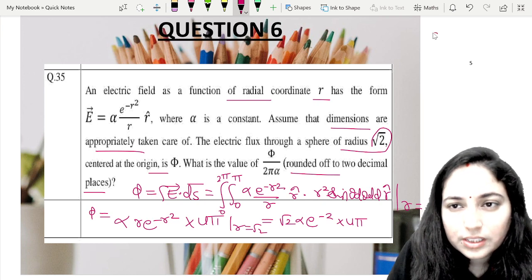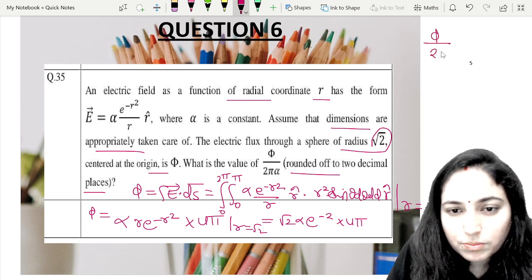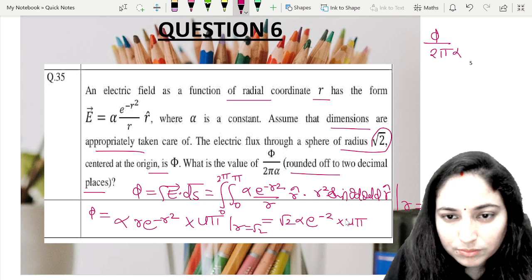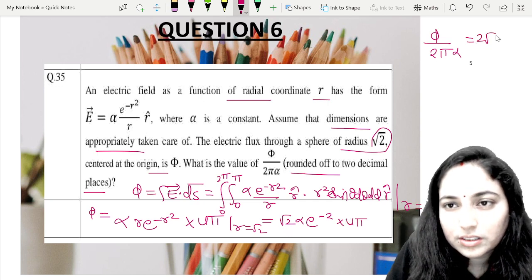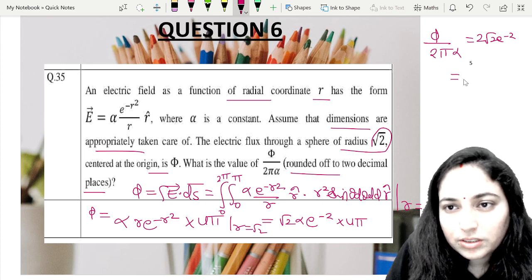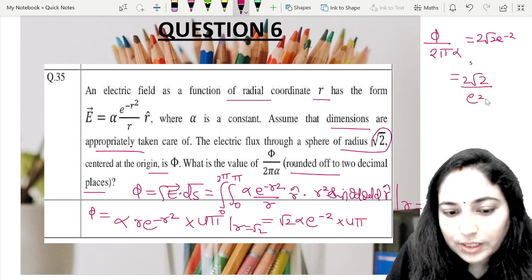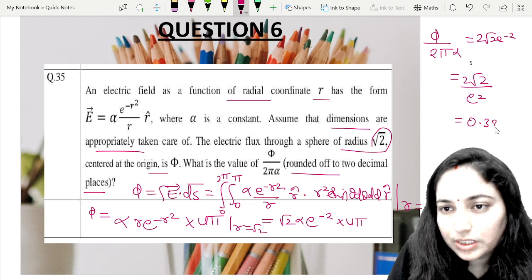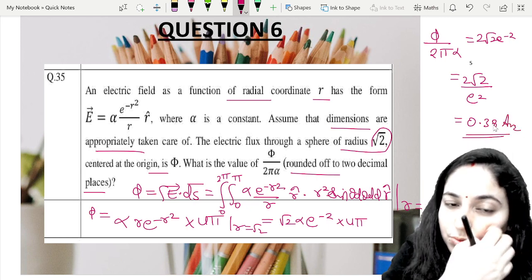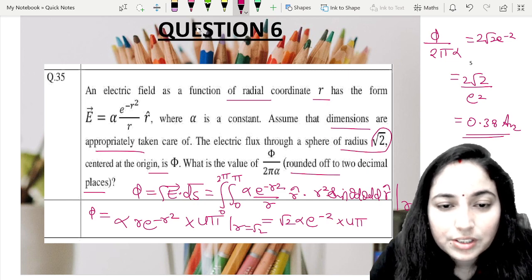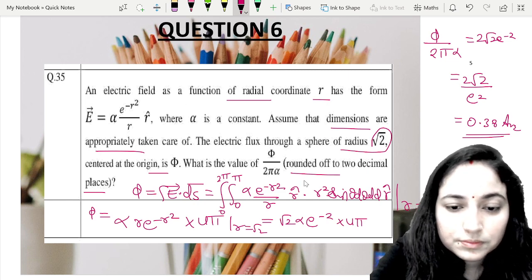Now we have Φ/(2π alpha), so Φ upon 2π alpha equals √2 e to the power minus 2. Now we have to calculate e to the power minus 2. So this will be the answer rounded up to two decimal places: 0.38.